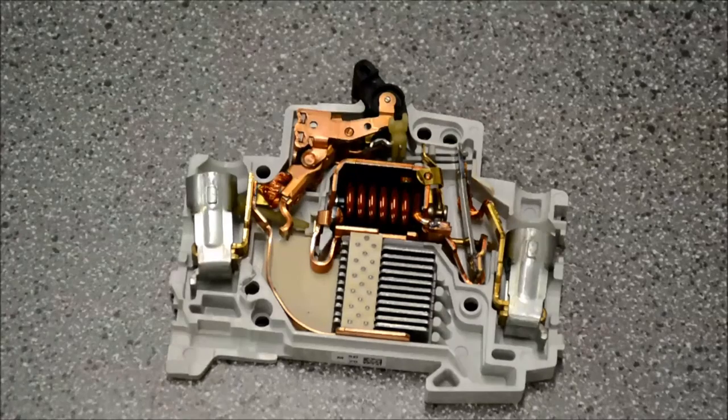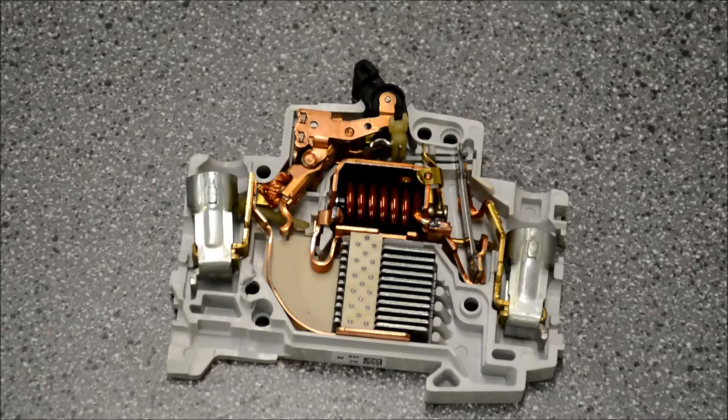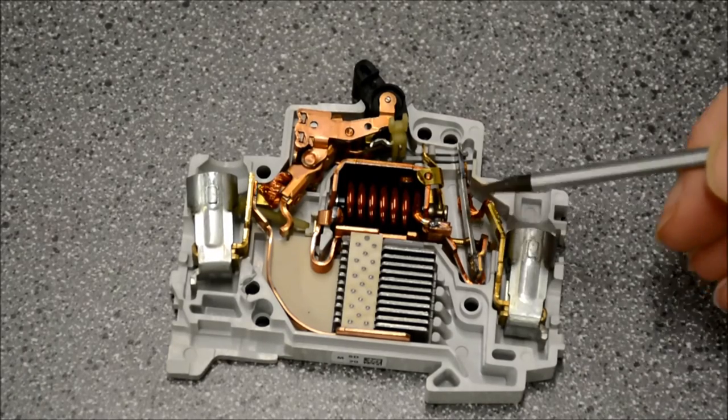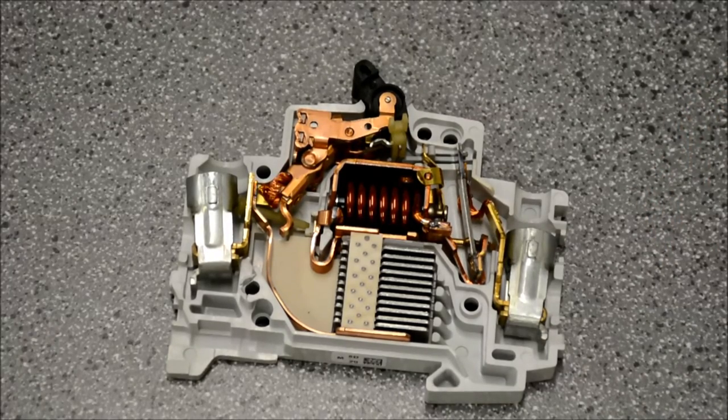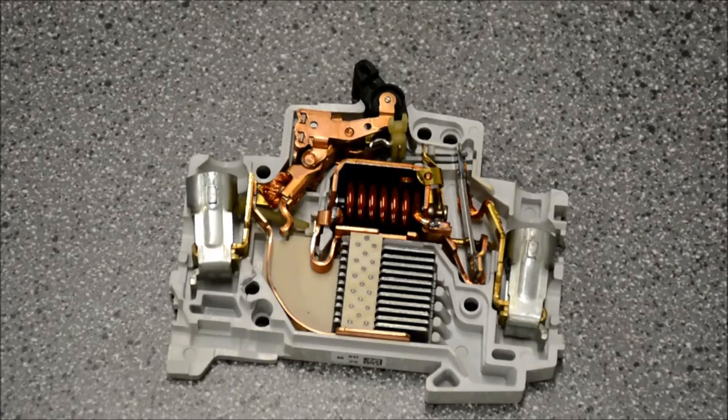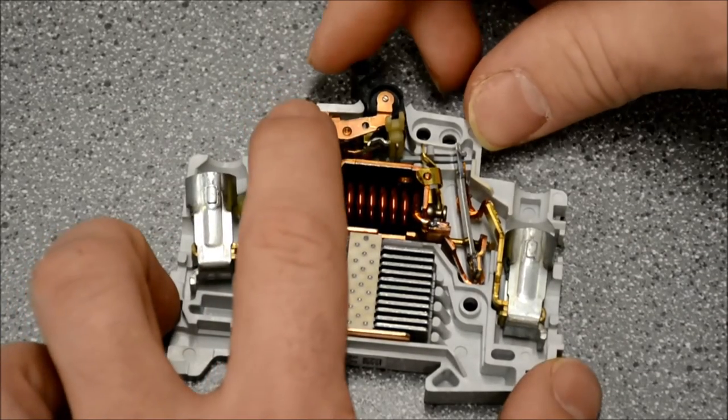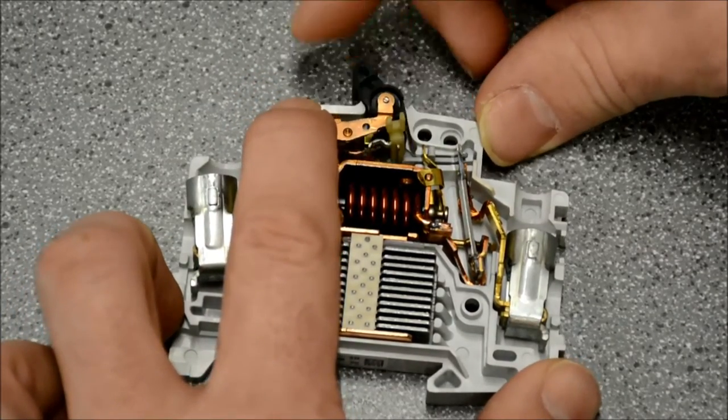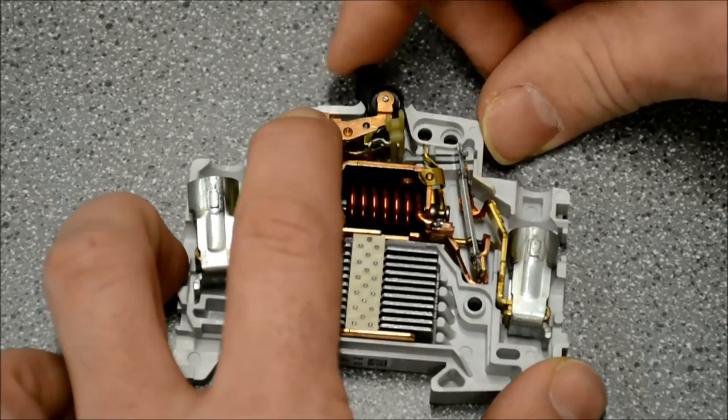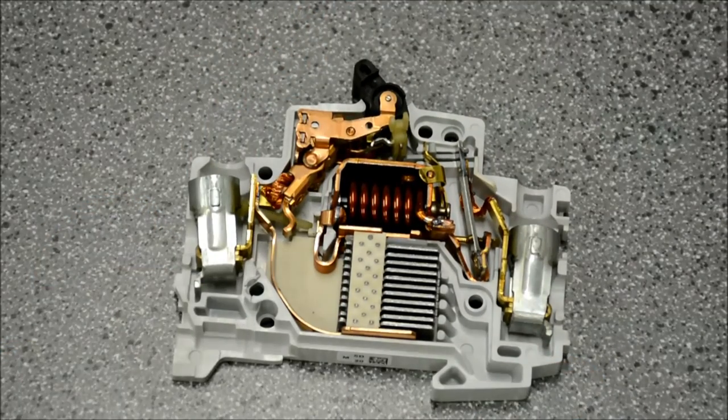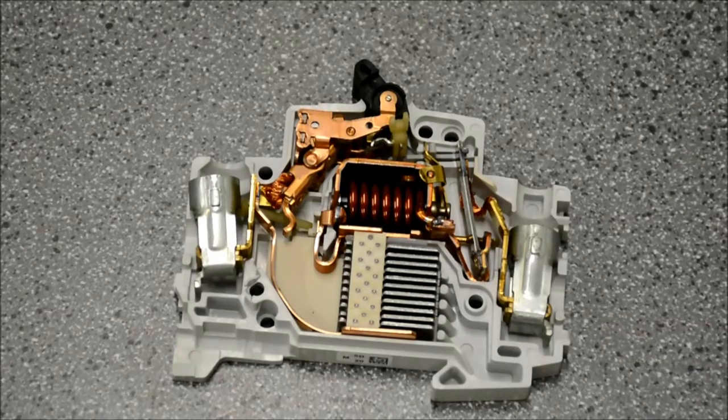What you should notice now that we've heated the bimetallic element is it still shows some curvature, because it's not cooled down to ambient temperature. So if we go inside here and attempt to reset the circuit breaker, we're not going to be able to reset it, because the ambient temperature and the bimetallic element are not equal.